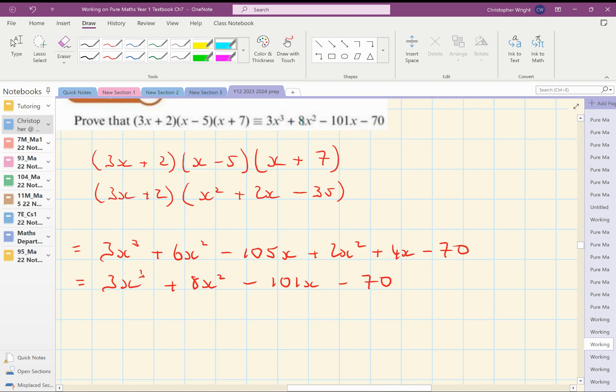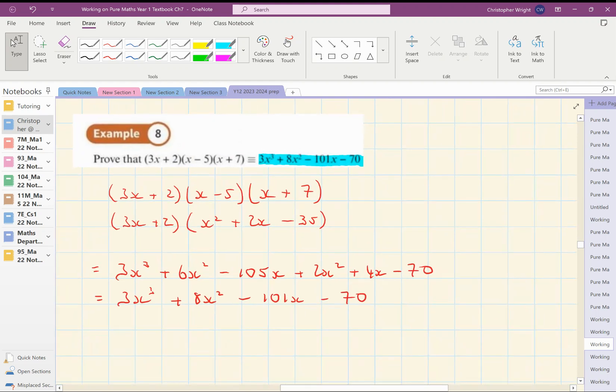3x cubed plus 8x squared minus 101x minus 70. Good. So I have proved that the left-hand side is always equal to the right-hand side.